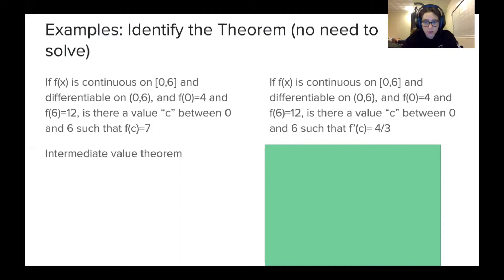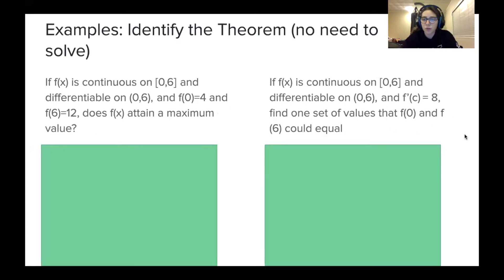Okay, and then second question, same frame, but now I'm asking, is there a value of c between 0 and 6, such that f'(c) equals 4/3? So for this one, you're going to use the mean value theorem. Now, if you go ahead and solve this, the answer is yes, but again, you don't have to do that. You know that you're using the mean value theorem because it's asking for the derivative, right? f'(c) is the derivative.